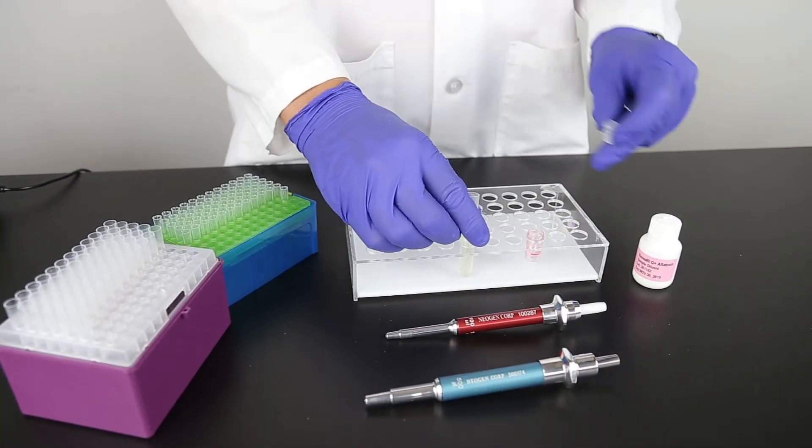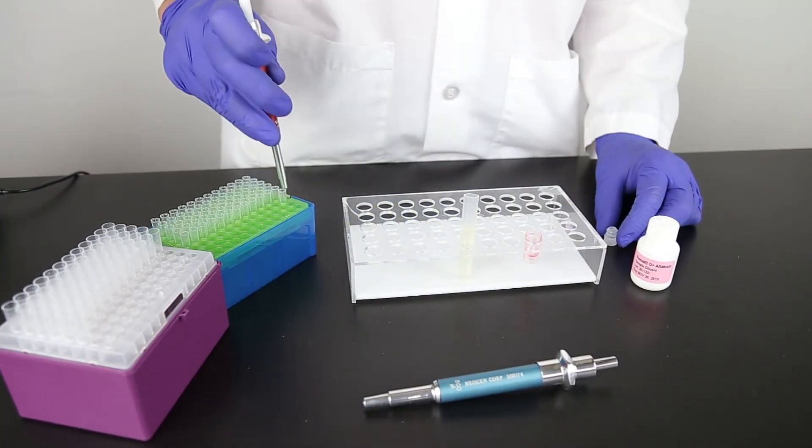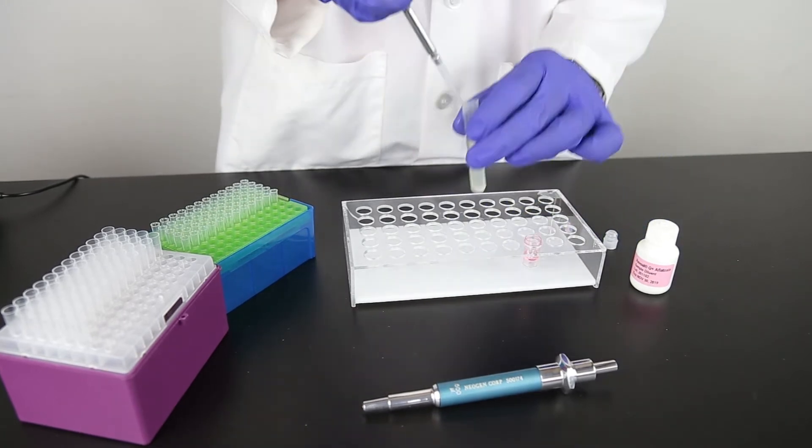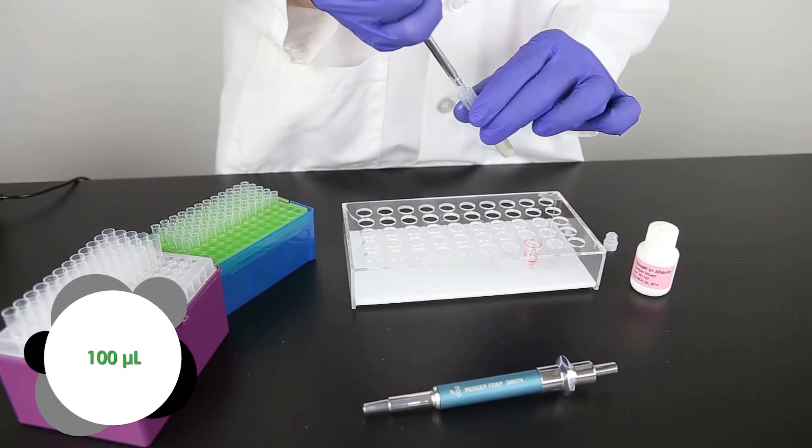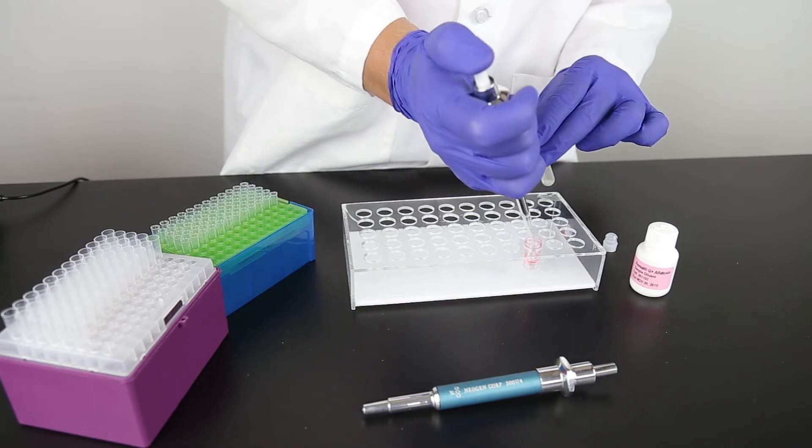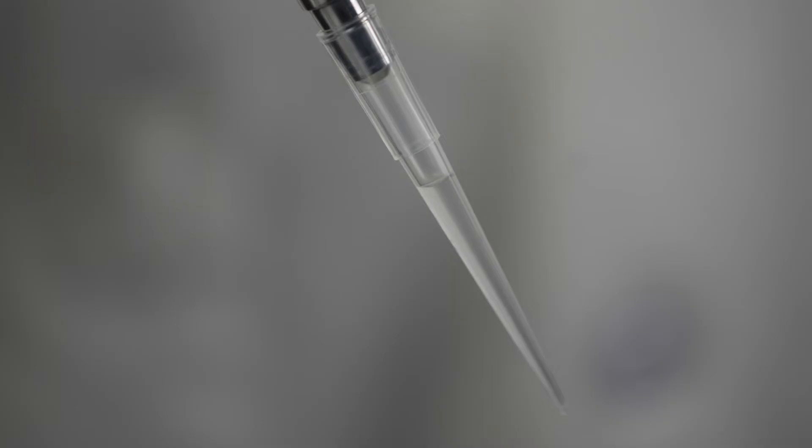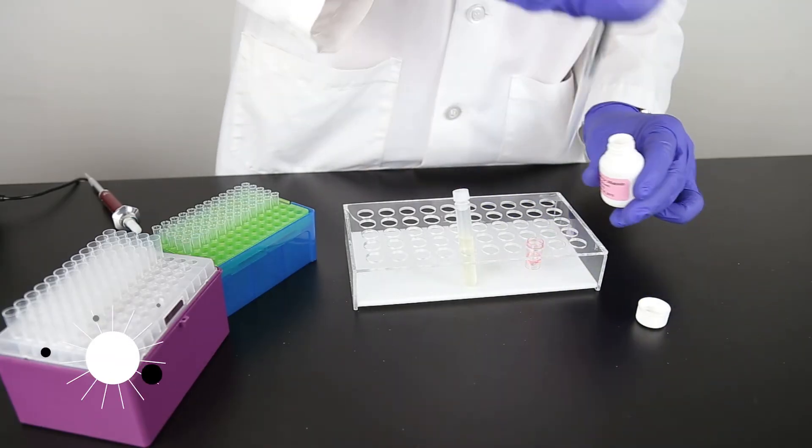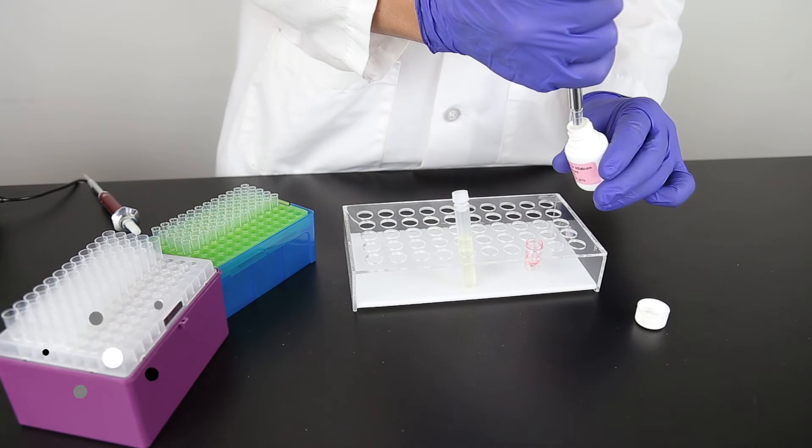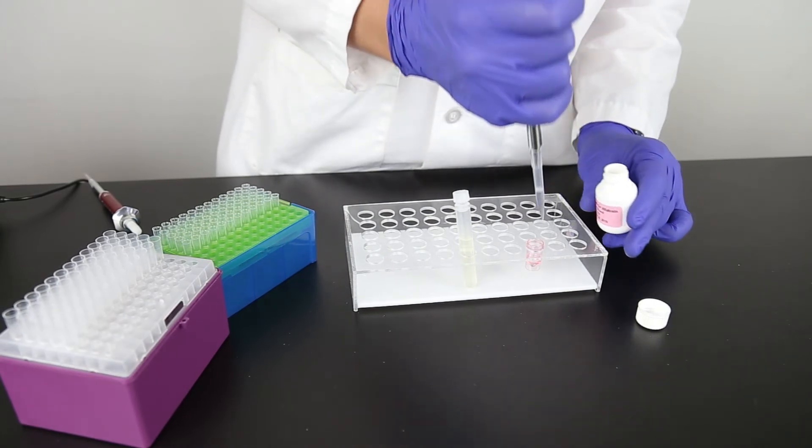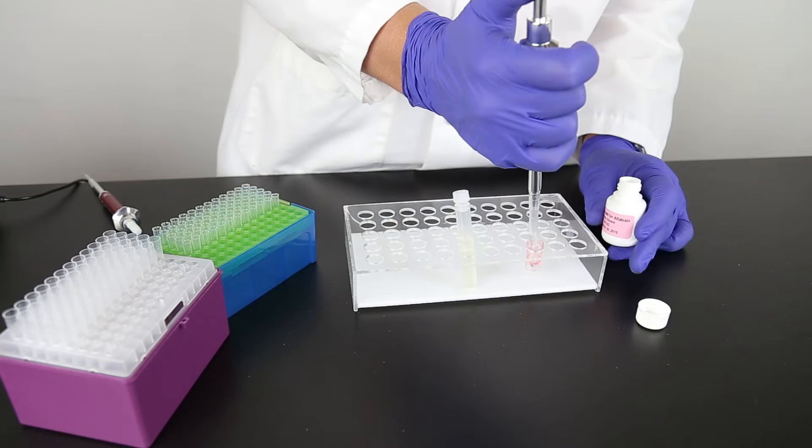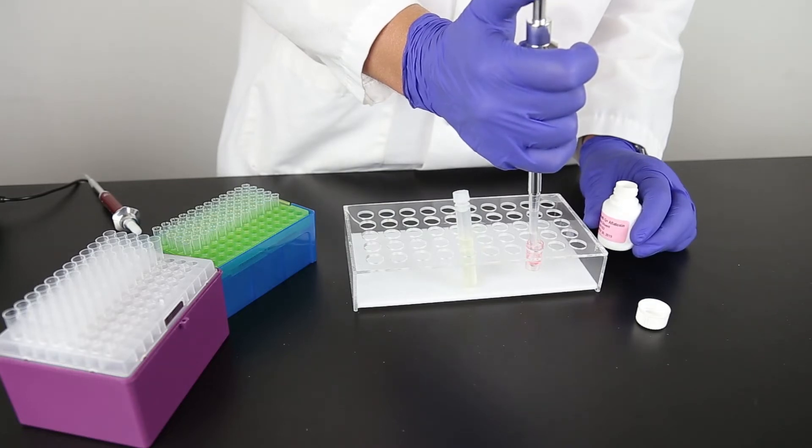For each sample you are testing, place a red dilution cup into the sample rack. Add 100 microliters sample to the red dilution cup. It is important to make sure the pipette tip is fully charged with liquid and doesn't have any air bubbles prior to dispensing the liquid into the cup. Next, add 500 microliters sample diluent to the sample cup. Mix by pipetting up and down five times. It is important to mix thoroughly.